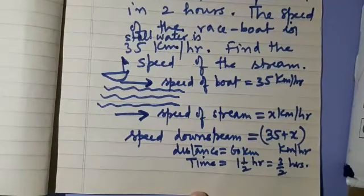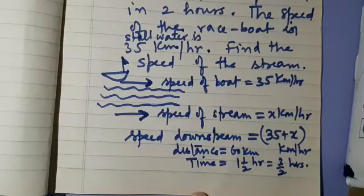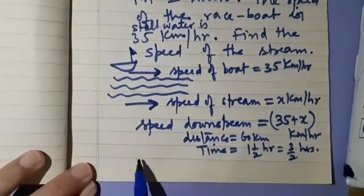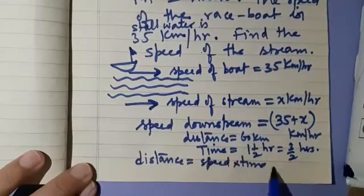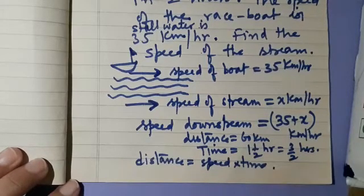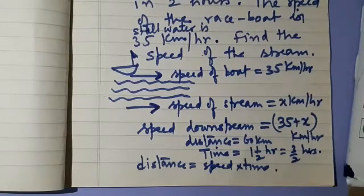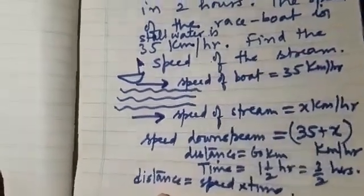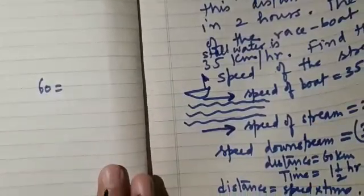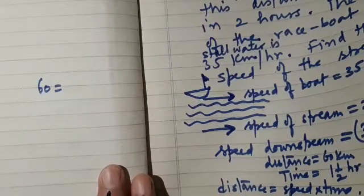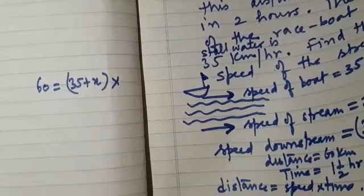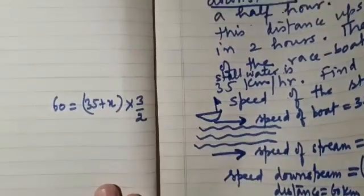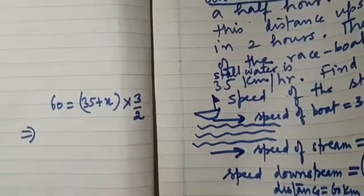Can you frame a linear equation in this situation? What is the relation between speed, distance, and time? Yes, we know that distance is equal to speed into time. Using this formula, we are going to frame the equation. The distance traveled is 60 kilometers, so 60 is equal to speed downstream — that is 35 plus X — into time, which is 3 by 2 hours.